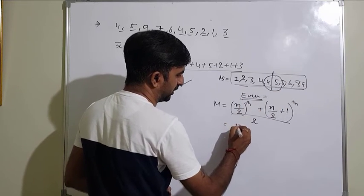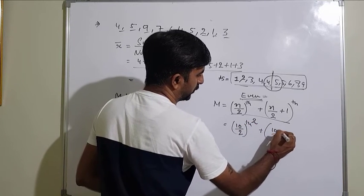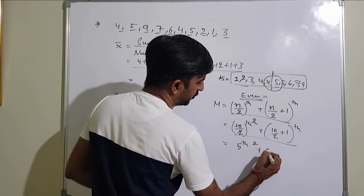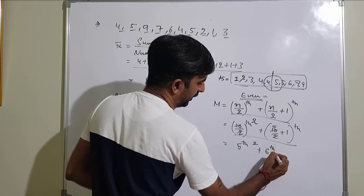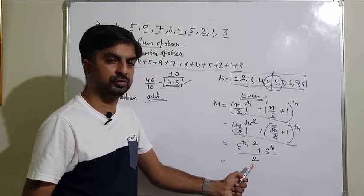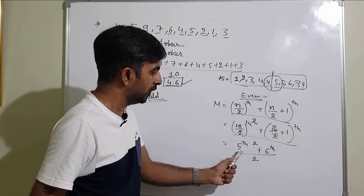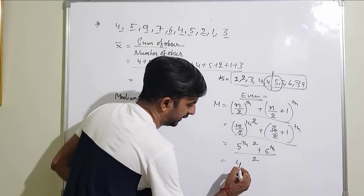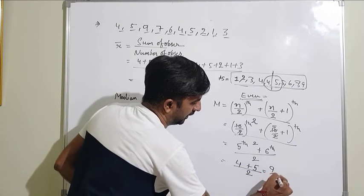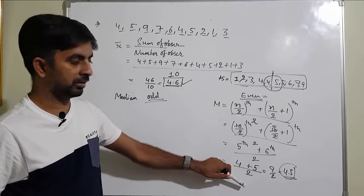With n = 10: that is the 5th observation plus the 6th observation, divided by 2. A common mistake is adding 5 + 6 = 11 divided by 2 = 5.5, but that is wrong. You need to identify the actual observations — the 5th observation is 4 and the 6th observation is 5. So 4 + 5 = 9, divided by 2, gives 4.5. The median for this even-numbered data is 4.5.